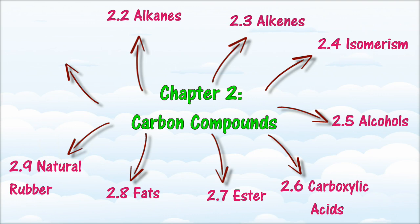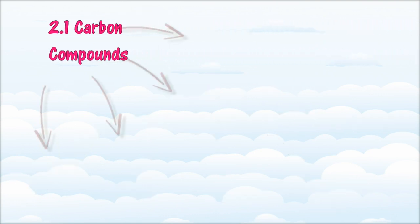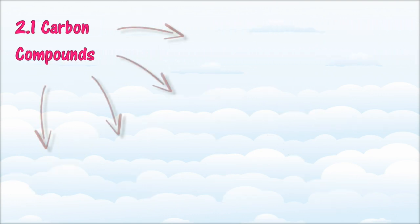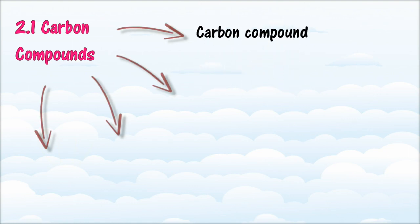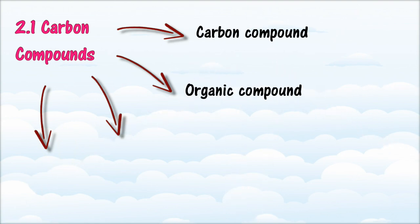In Section 2.1, we will learn about Carbon Compounds. At the end of this section, you should be able to: state what a Carbon Compound is; state that Carbon Compounds can be classified into two groups, that is organic and inorganic; state what an Organic Compound is; and give examples of organic and inorganic carbon compounds.